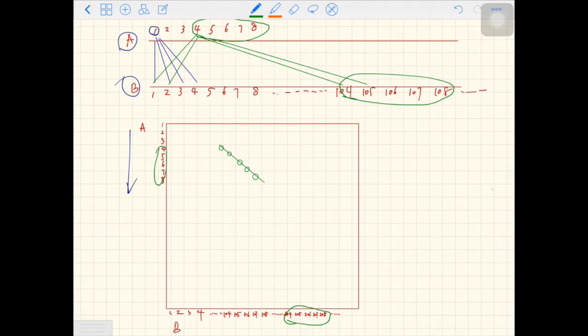So A4 is the same as 204. Put a dot. A5 is the same as B205, A6 the same as 206, B7 and 8.